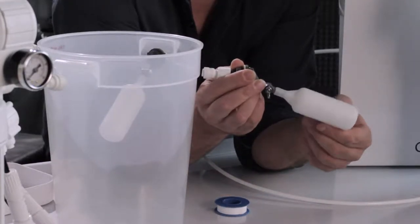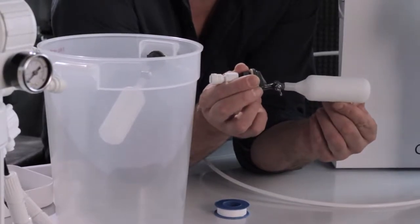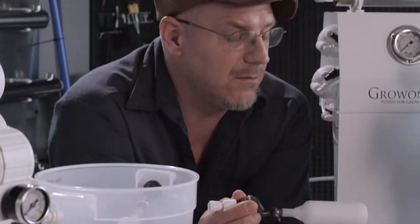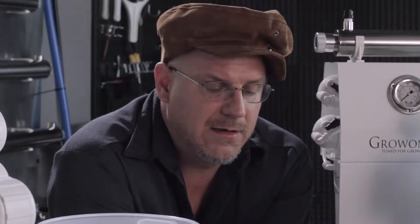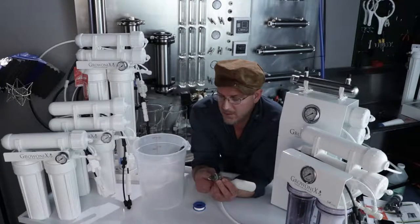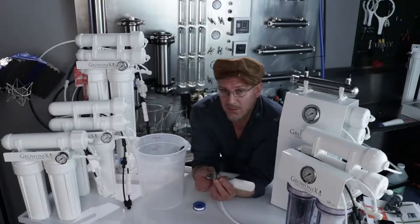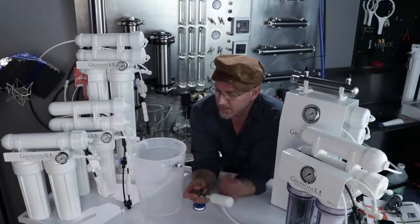When that valve hits, you'll feel the needle and seat in that valve. You'll feel them make contact and that's when the valve will close and the RO will shut off. Now to install this valve, you need to cut a half inch hole in your tank or reservoir. I've already done that on this little mini tank that we're going to demonstrate it with.